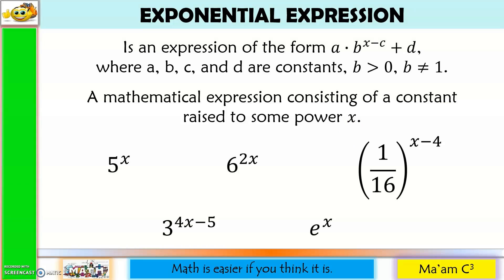Here are some examples. Remember two things: you should have a base that is a constant, and an exponent that contains a variable. Let us examine the bases: 5 is a constant, 6, 1 over 16, 3, and e. Is e a constant? Yes, it is. E is a numerical constant — just like pi, which is approximately equal to 3.1416, e is also a numerical constant approximately equal to 2.71828. Now let us examine our exponents — each contains a variable. Therefore, these are exponential expressions.